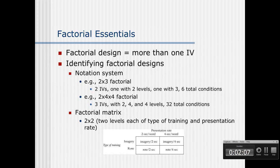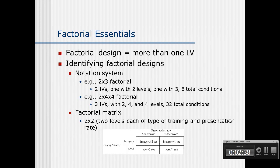The notation system we use to describe factorial designs uses numbers where the count of numbers represents the number of factors or independent variables. The value of each number indicates the levels of that factor. So a 2 by 3 factorial has two independent variables — one with two levels and the other with three. A 2 by 4 by 4 factorial has three independent variables: the first with two levels, the second with four, and the final one with four levels.